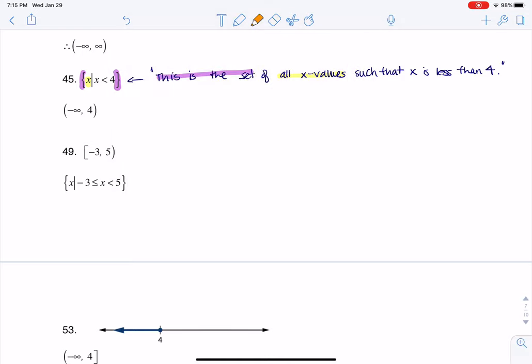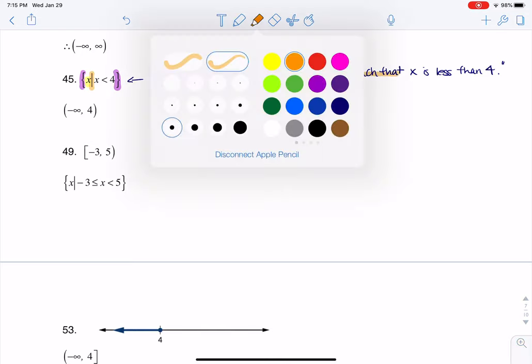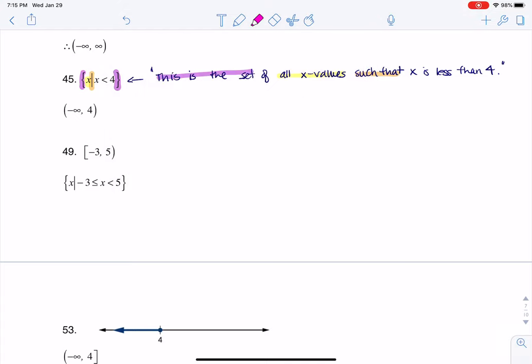When you see the word such that, that's what this vertical bar here is representing. And last but not least, if it says x is less than 4, that's this symbol right here. So I want every x value such that x is less than 4.